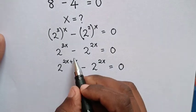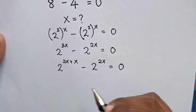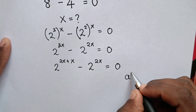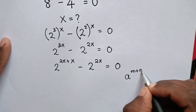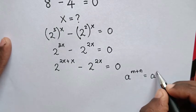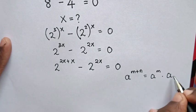Now we will apply the exponential rule, which is a^(m+n) = a^m times a^n.